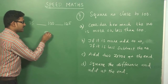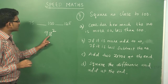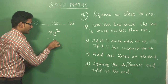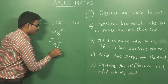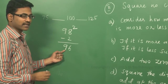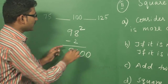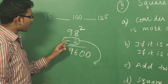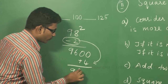If the number is 98 squared, consider how much it is less than 100 — it is minus 2. Since it is less, subtract: 98 minus 2 equals 96. Third step: add two zeros, giving 9600. Finally, square the difference: minus 2 squared is plus 4. So 9604 will be the answer for 98 squared.